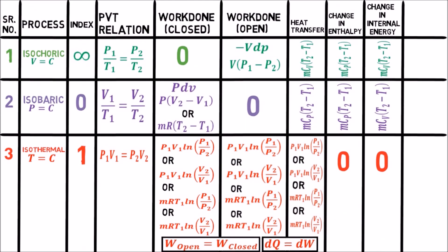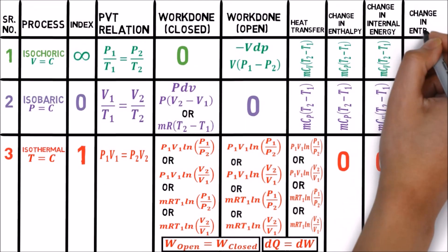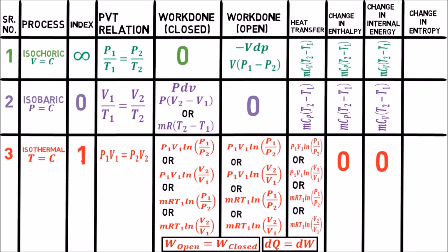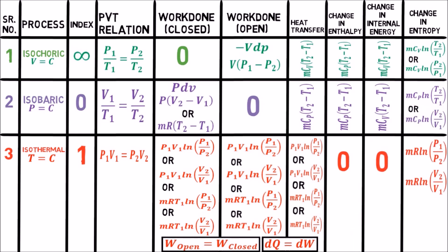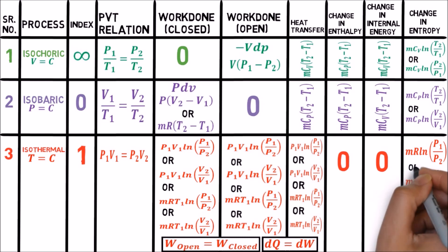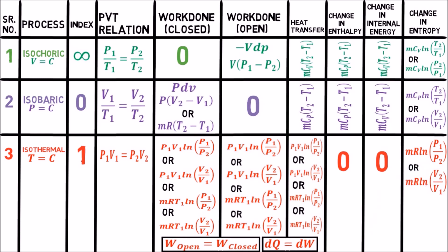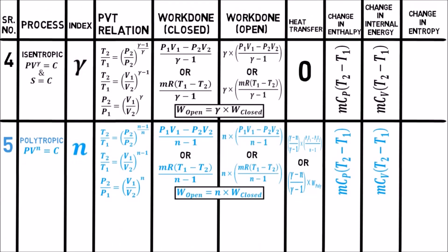The last column is very important: change in entropy during these processes, derived from entropy equations. For isochoric: mCv ln(T2/T1) or mCv ln(P2/P1). For isobaric: mCp ln(T2/T1) or mCp ln(V2/V1). For isothermal: mR ln(P1/P2) or mR ln(V2/V1). In isentropic process, as the name indicates, entropy remains constant, so change in entropy is zero. For polytropic process: (n − gamma) divided by (n − 1) times mCv ln(T2/T1).